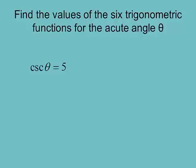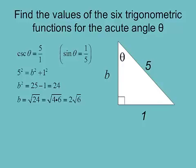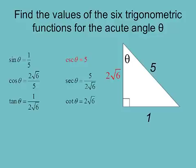If cosecant = 5, first write that as 5/1. Then take the reciprocal — the reciprocal of cosecant is sine — so sine = 1/5. Build the triangle: opposite = 1, hypotenuse = 5, adjacent is unknown. Using Pythagorean theorem, B = √24 = 2√6. So sine = 1/5, cosine = 2√6/5, tangent = 1/(2√6), and then the three reciprocals.